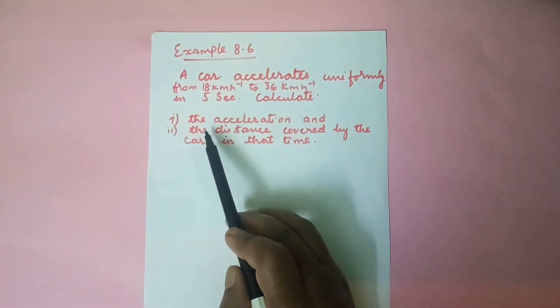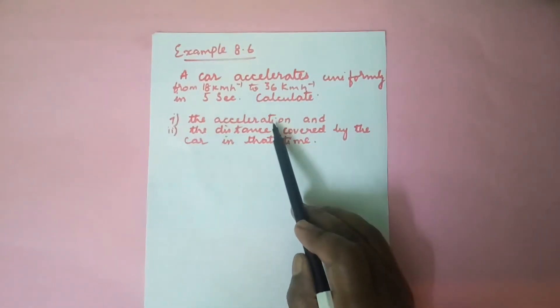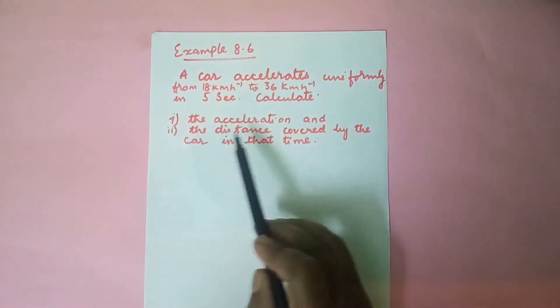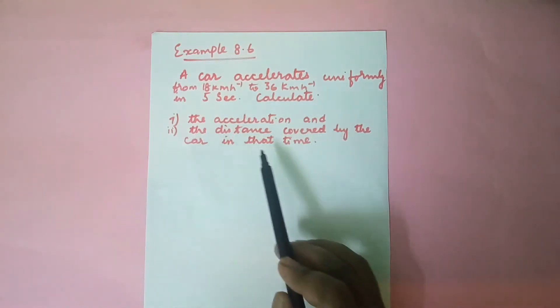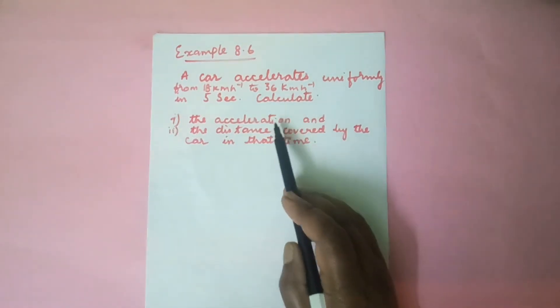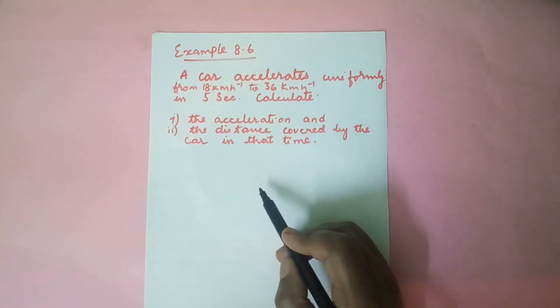We have two things to calculate. The first one is the acceleration and the distance covered by the car in that time. So acceleration and the distance traveled we are supposed to find.